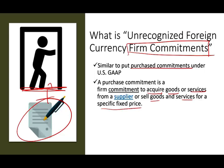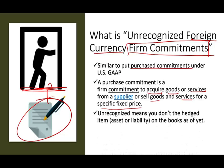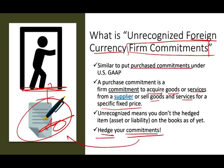For the purpose of this lecture, we are dealing with a foreign currency commitment. You sold something and you're going to be receiving money in a foreign currency, or you bought something and you have to pay in a foreign currency. It's called unrecognized because there is no asset or liability on the books — all you did is sign the contract. Now you have to protect that signature because it requires you to either pay or receive a foreign currency that you have to translate.